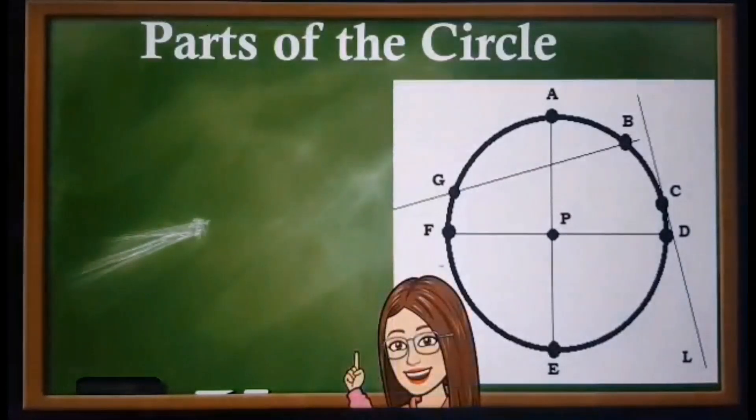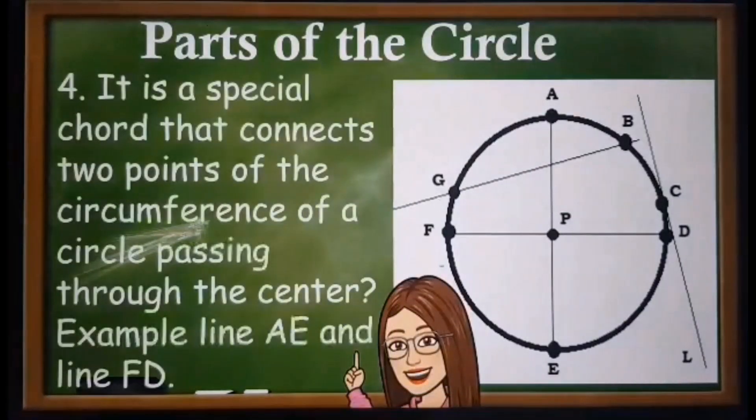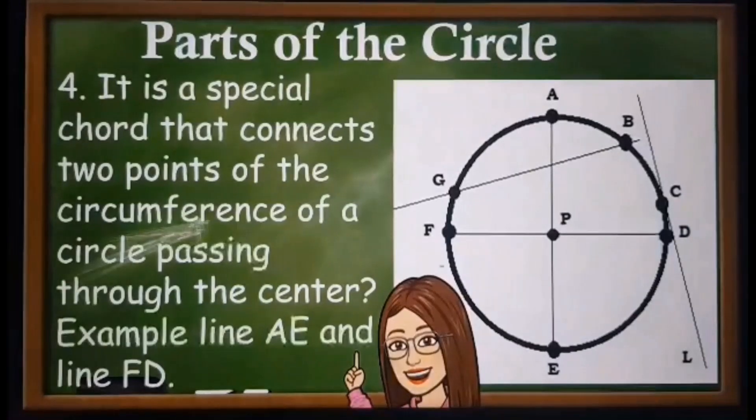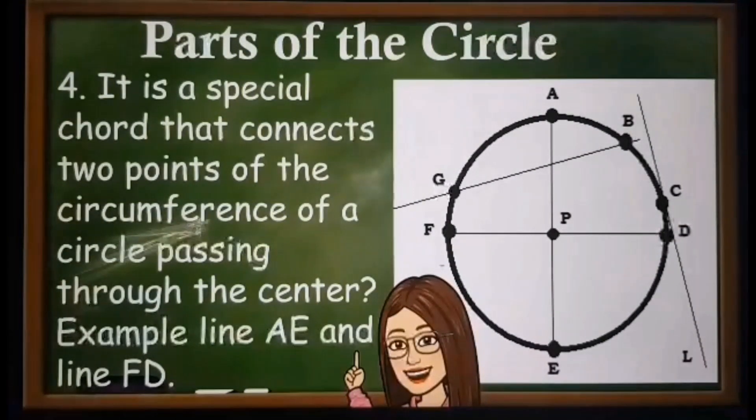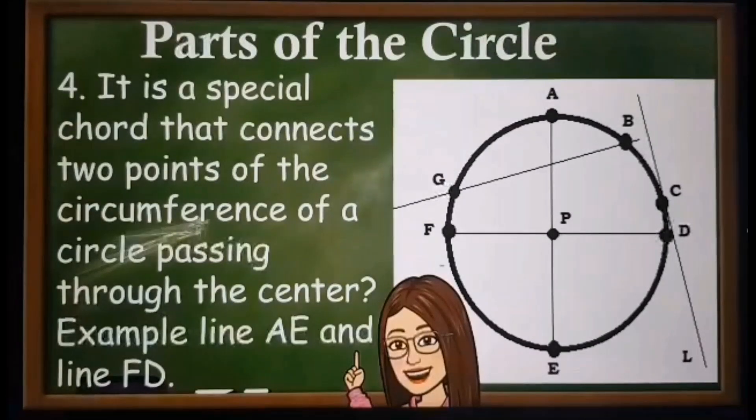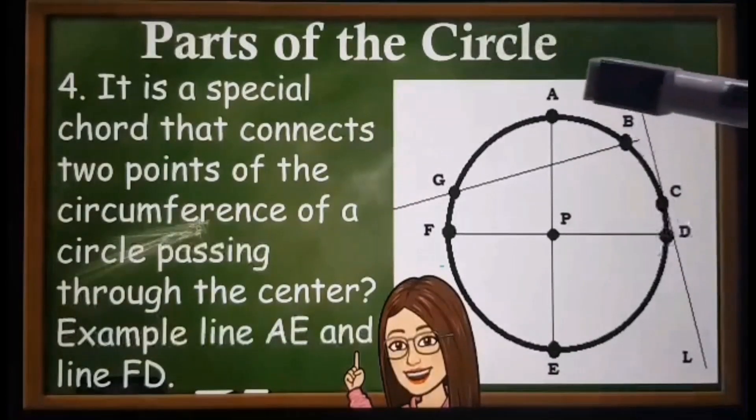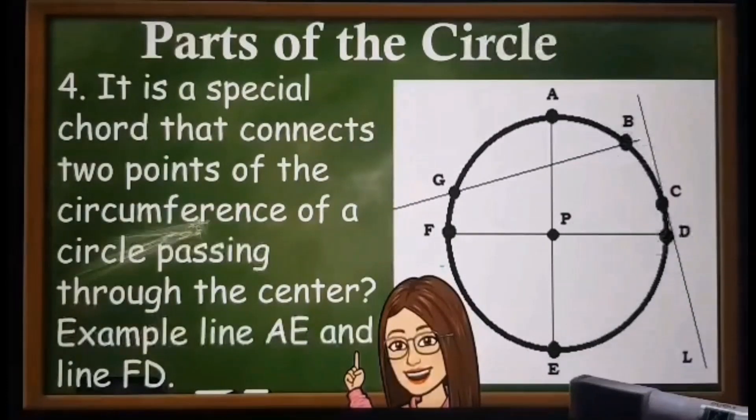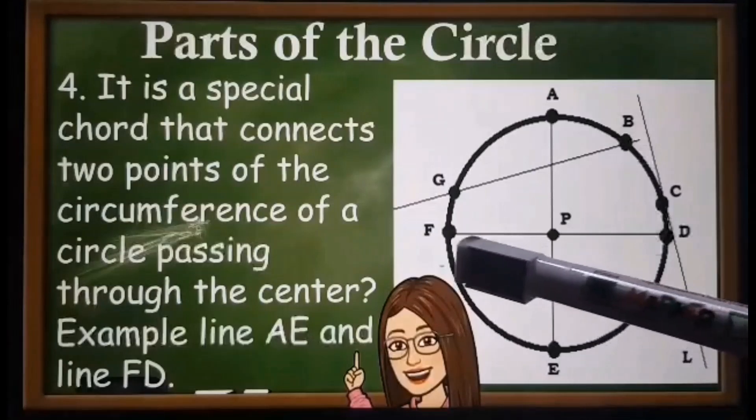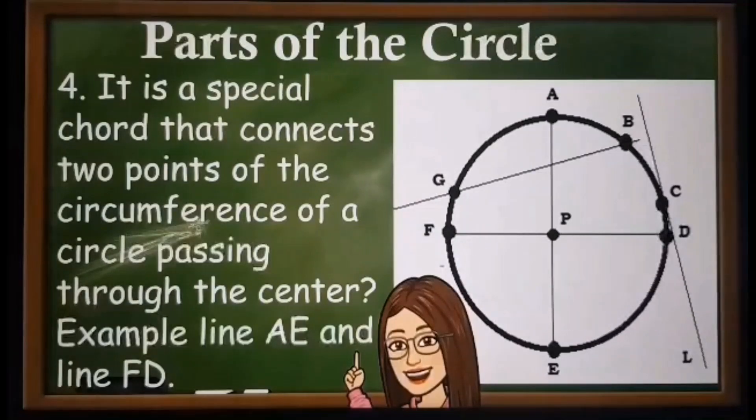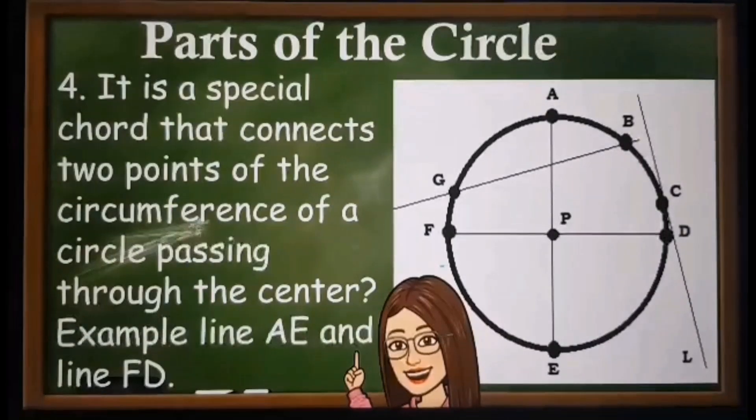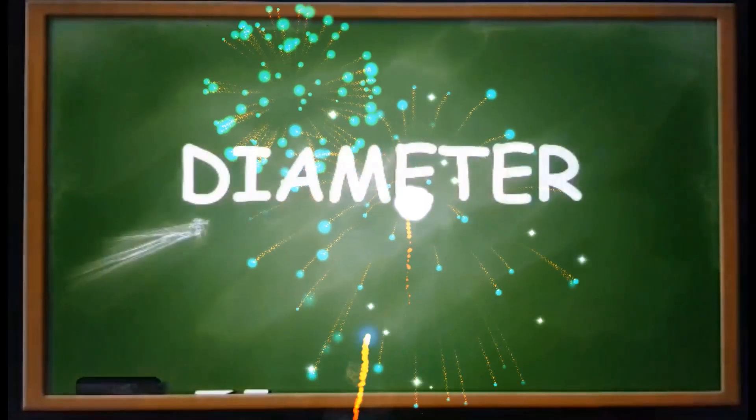Look again on the figure. It is a line connecting two points of the circumference of the circle. Example, line G, B. If your answer is chord, you are absolutely right.